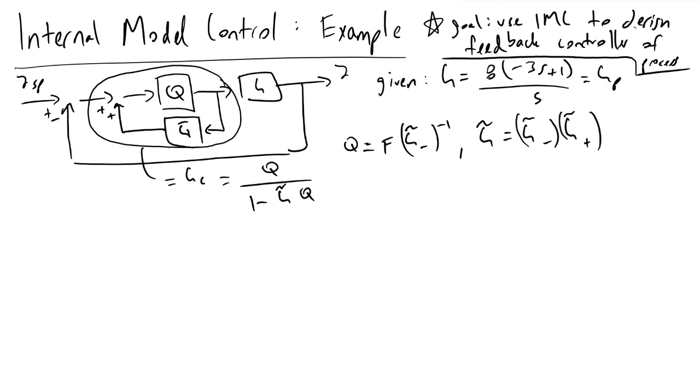And if we begin to analyze this GP function here, we'll recognize in this situation that G tilde minus is equal to the stable part of our transfer function, which is 8 over s,